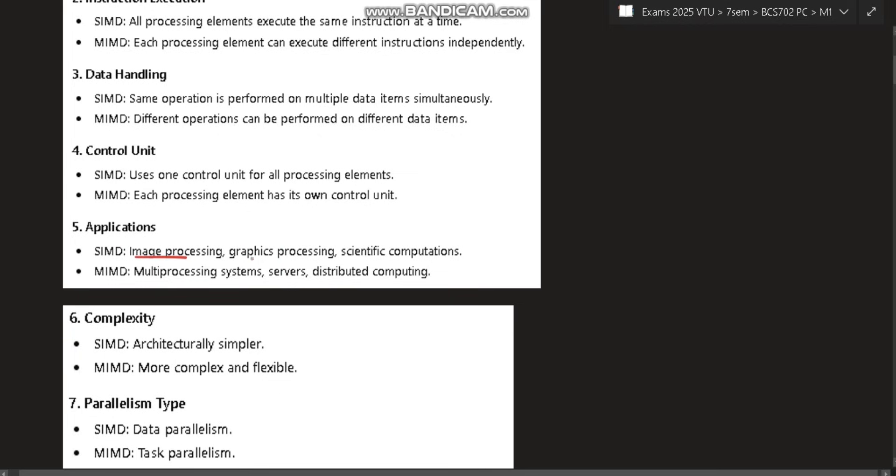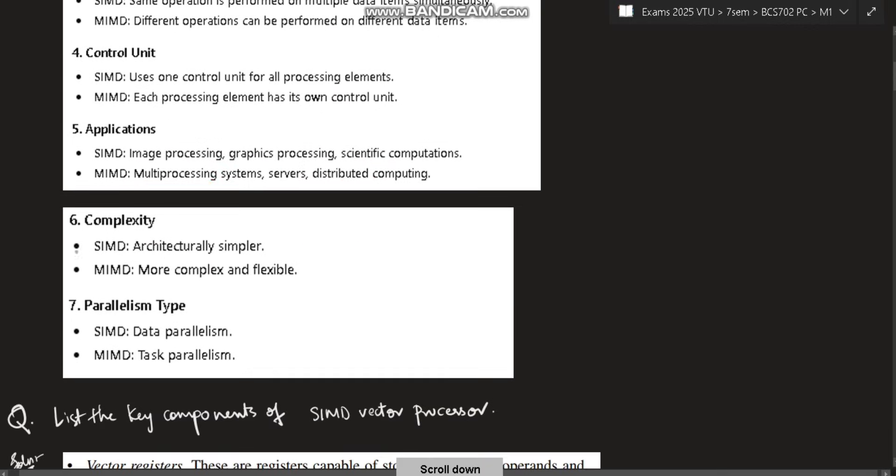Applications: SIMD is used in image processing, graph processing and scientific computations, whereas MIMD is in multiprocessing systems, servers and distributed computing. Complexity: SIMD is simpler and MIMD is more complex as it has multiple instructions. And parallelism: data parallelism is there in SIMD but task parallelism is present in MIMD. You have to write any five of the differences.